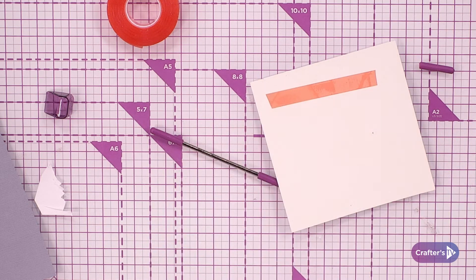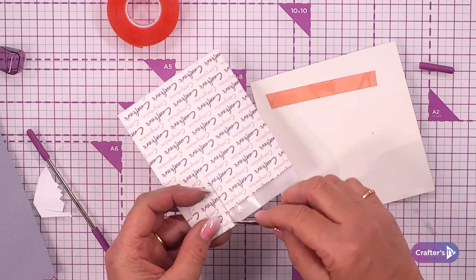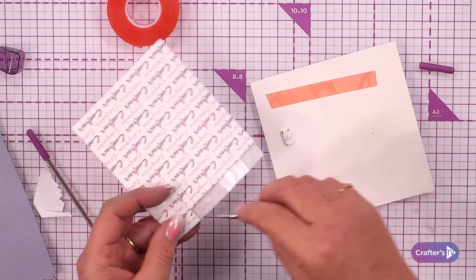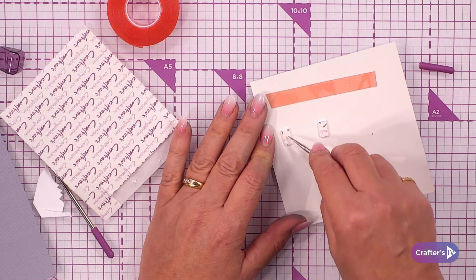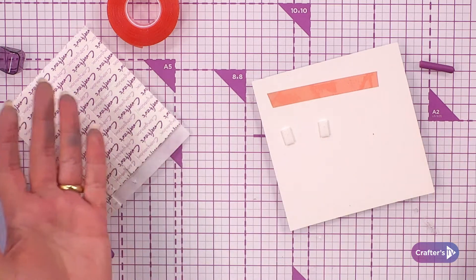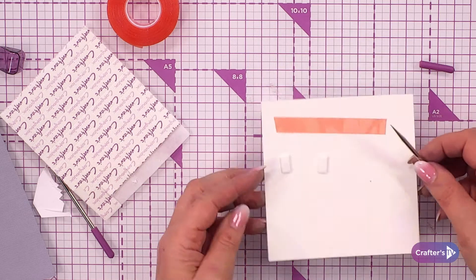If I wanted to put some foam pads on the back of here, I can lift them off the carrier sheet using my pokey tool. And then all I need to do, stab through there, stab through there, and the backs are off the back of my foam pads.